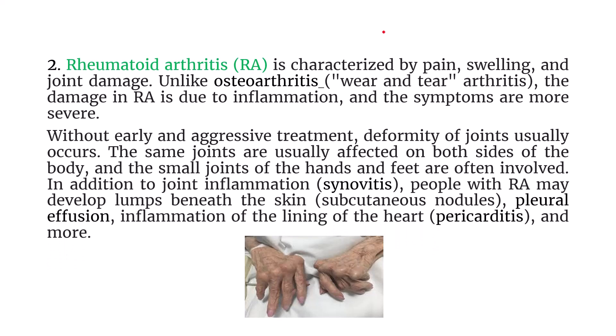Rheumatoid arthritis is characterized by pain, swelling, and joint damage, and is more severe than osteoarthritis. Without early and aggressive treatment, joint deformities usually occur. The same joint is affected on both sides of the body, and the small joints of the hands and feet are often involved. In addition to joint inflammation — called synovitis — people with RA may develop subcutaneous nodules, pleural effusion, and pericarditis, which is inflammation of the lining of the heart.